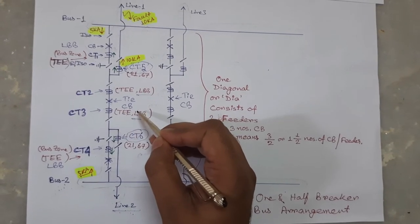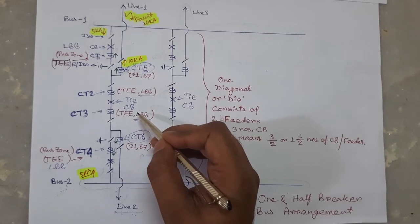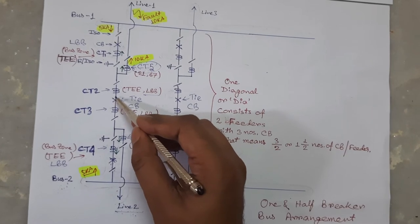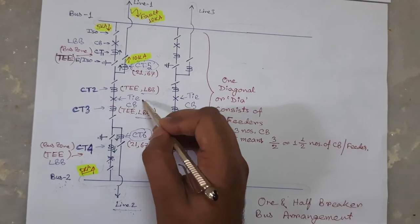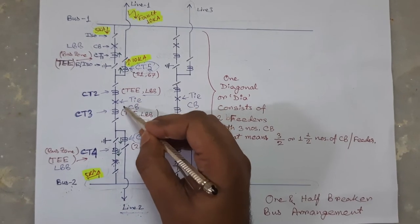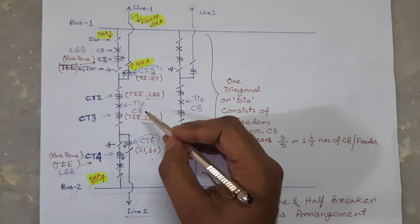And after initiation of tie LBB protection, it waits for a predefined time delay, say 200 millisecond, in a hope that this tie circuit breaker will be able to clear the fault. But if this tie circuit breaker fails to clear that fault, in that case,